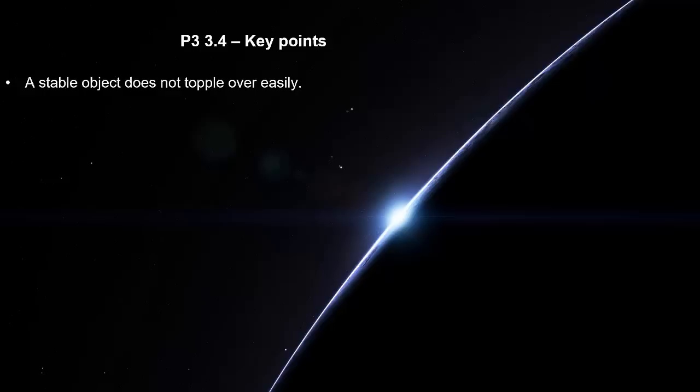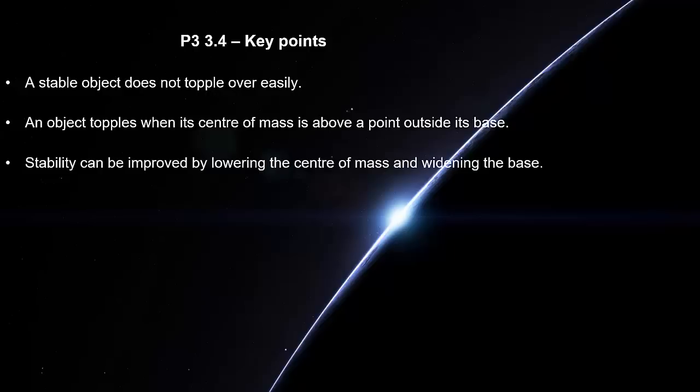A stable object does not topple over easily. An object topples when its center of mass is above a point outside its base. Stability can be improved by lowering the center of mass and widening the base.